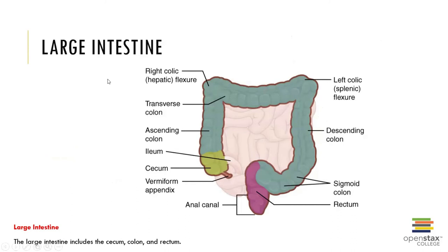Continuing through the lower GI tract, we now move to the large intestine, where fecal material is stored and concentrated. Another word for the large intestine is the large bowel, and in length it's an average of about five feet. The large intestine is responsible for resorbing water and compacting intestinal contents into feces, absorbing important vitamins produced by our bodies, and storing fecal material prior to defecation.